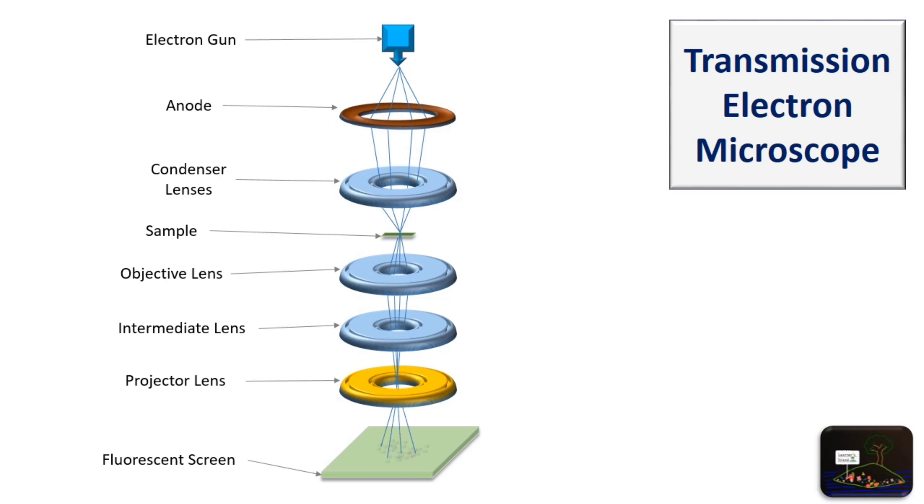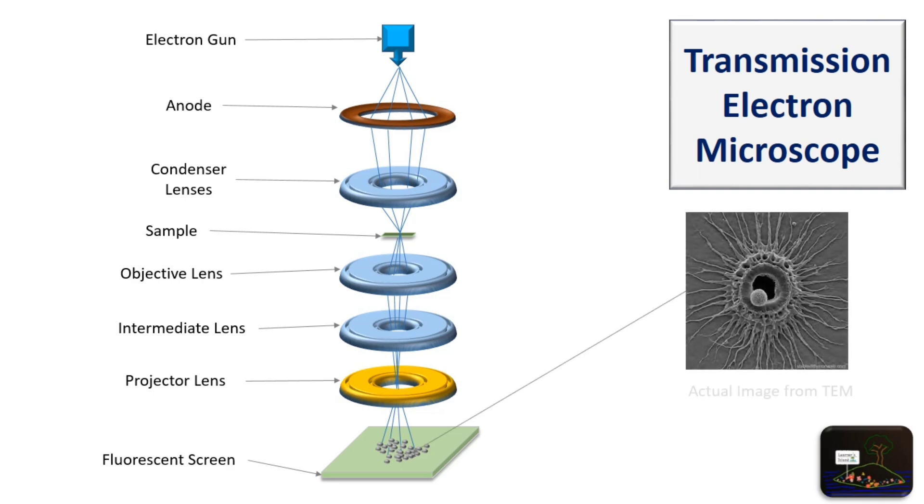TEM also has three signals to be processed to create actual image: scattered electrons, energy loss electrons, and characteristic x-rays. Processing which the actual image is obtained, as shown in the example.